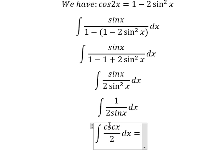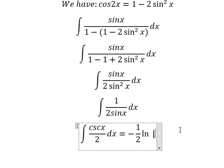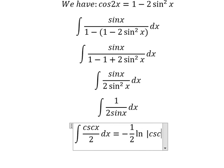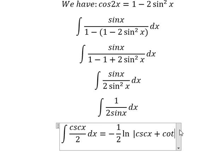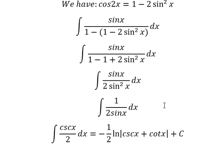The integration of cosecant of x gives us negative, and we have ln of the absolute value of cosecant x plus cotangent x. We put the constant here. This is the end. Thank you for watching.